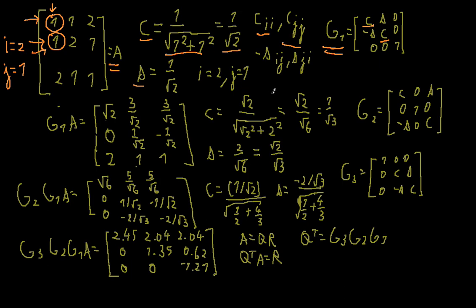The negative sine is in place (i,j), so in place (2,1). You can also remember that the negative sine is always in the place of the element you want to eliminate — that can be a useful shortcut. The positive sine is in place (j,i), so in place (1,2). Everything else is filled with 0, except the diagonal where we put 1. For example, if it were a 4×4 matrix, you would put zeros and 1s along the diagonal accordingly, and you can extend this to as many dimensions as needed.